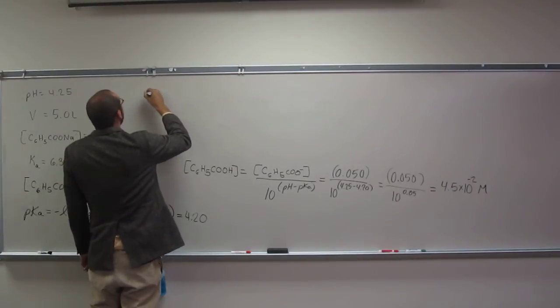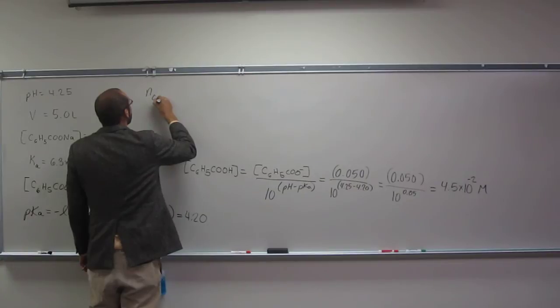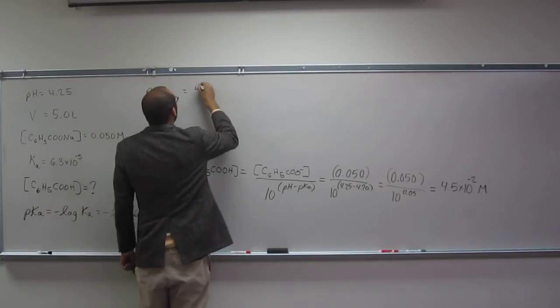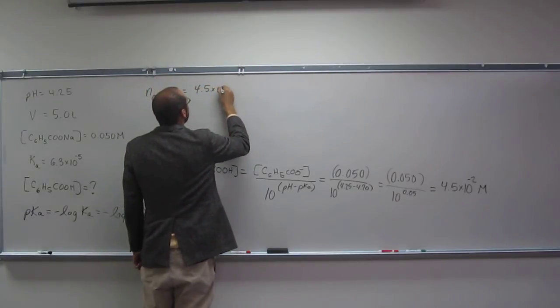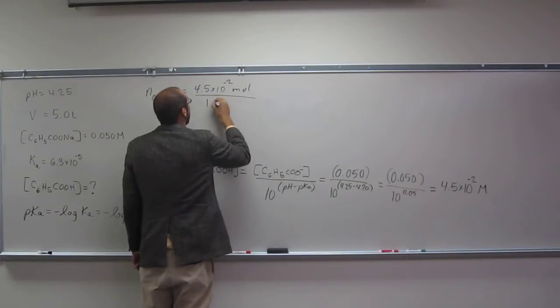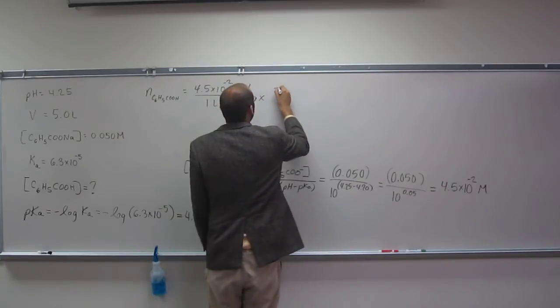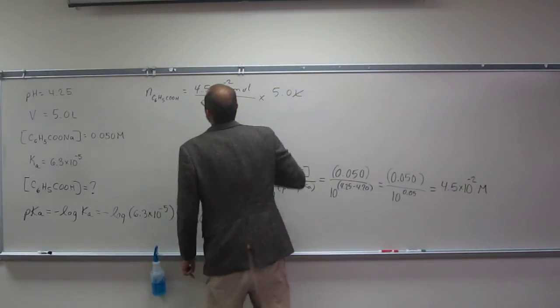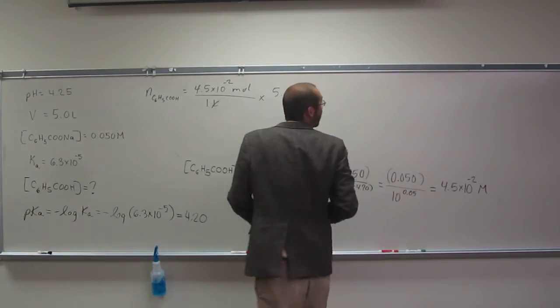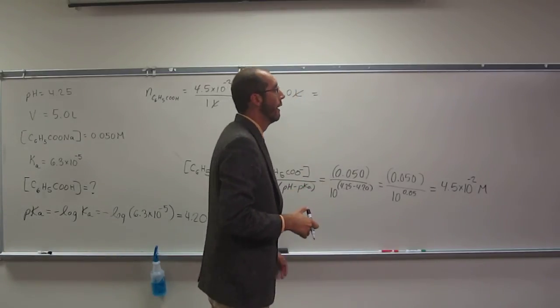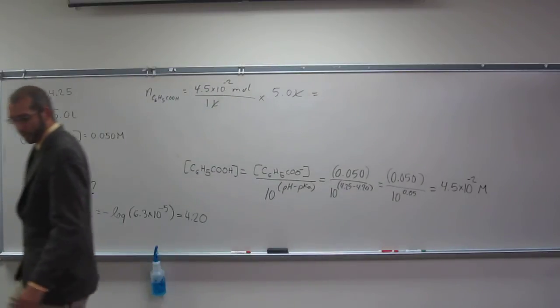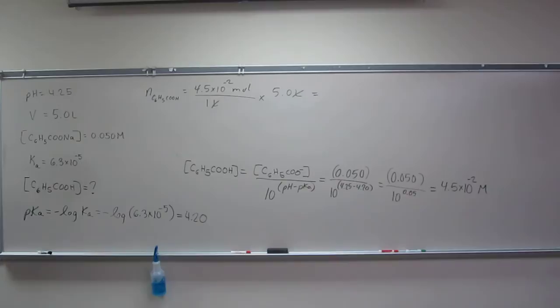So, the number of moles of benzoic acid, C6H5COOH, is 4.5 times 10 to the negative 2 moles per 1 liter. We can multiply that by 5.0 liters. Cancel that out. It doesn't tell us. It says, how would you prepare? I'm assuming they want you to get to mass. So, somebody figure out the molar mass of benzoic acid.